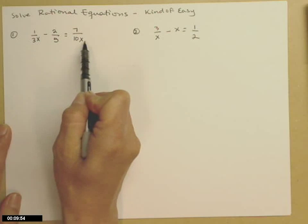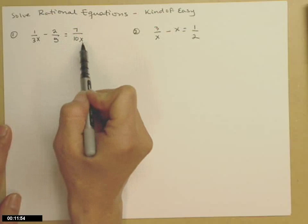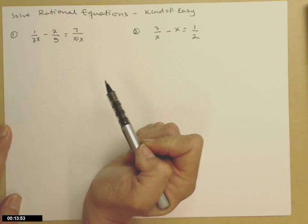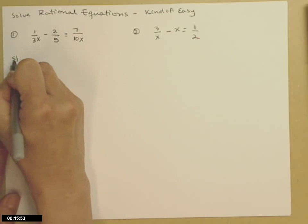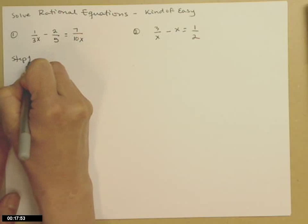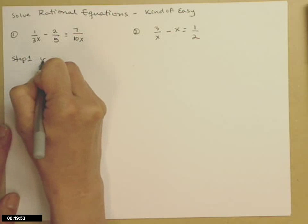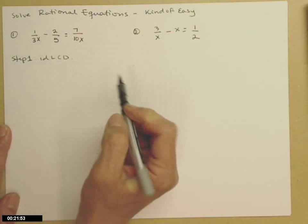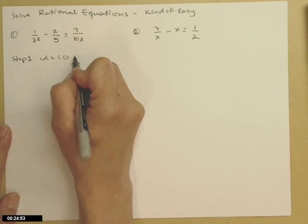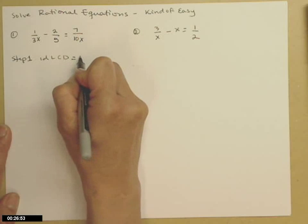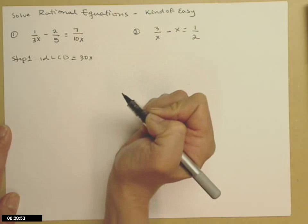So, first of all, recognize I do have a rational equation, something with fractions. It has an equal sign. First step is to identify the LCD. So 3x, 5, and 10x. The lowest common denominator would be 30x.